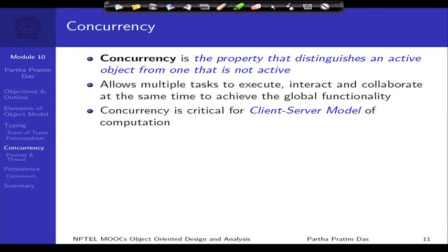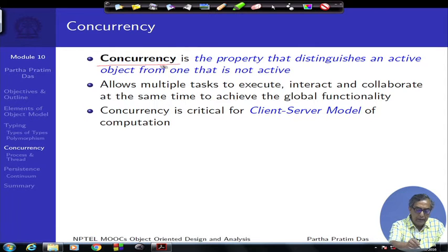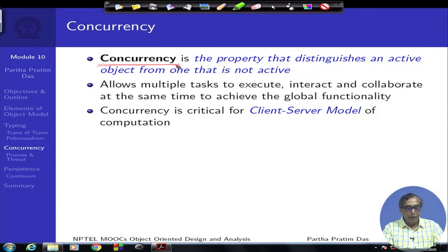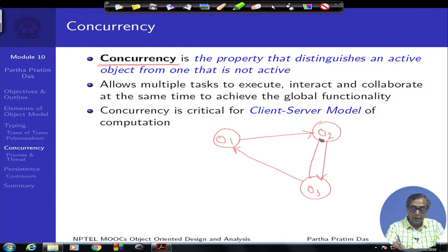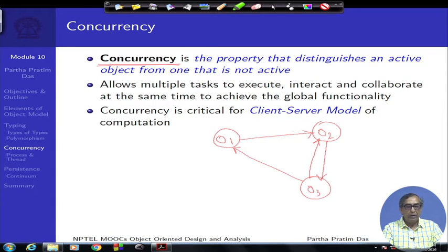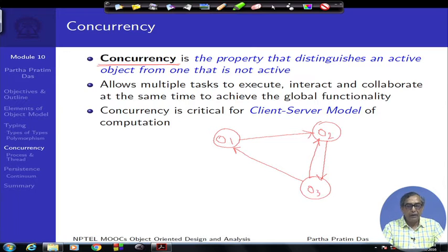We now talk about the second element which is concurrency. Concurrency, as the name suggests, relates to two or more things happening together at the same time. If I have objects O1, O2, and O3 between themselves sending different messages and expecting to get service, then certainly you cannot have a sequential or well-ordered structure to do this. You want all of these to happen as and when they need to happen.